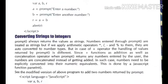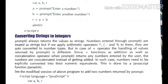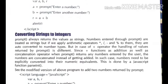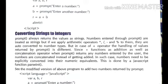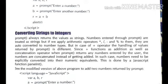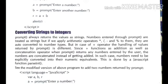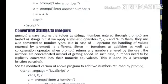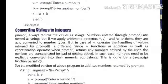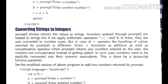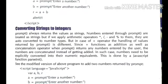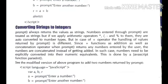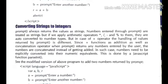However, in the case of the plus operator, the handling of values returned by prompt is different, since plus functions as both an addition and a concatenation operator. When the prompt function returns any number entered by the user, the numbers are concatenated instead of being added. In such cases, numbers need to be explicitly converted into their numeric equivalents using the JavaScript function parseInt.